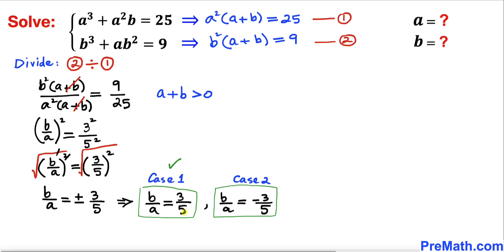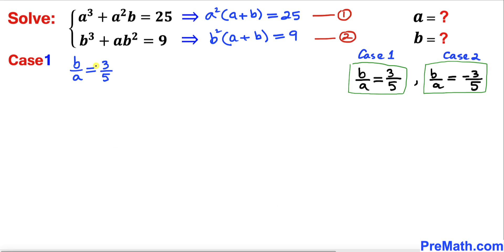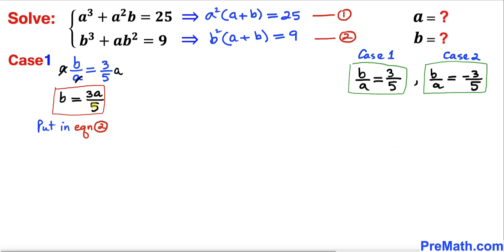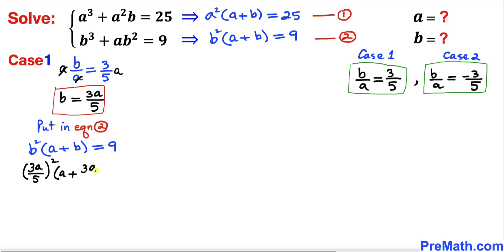Case one: b/a = 3/5. Multiplying both sides by a, we isolate b and get b = 3a/5. Now let's substitute this into equation two, replacing b with 3a/5: (3a/5)² × (a + 3a/5) = 9.